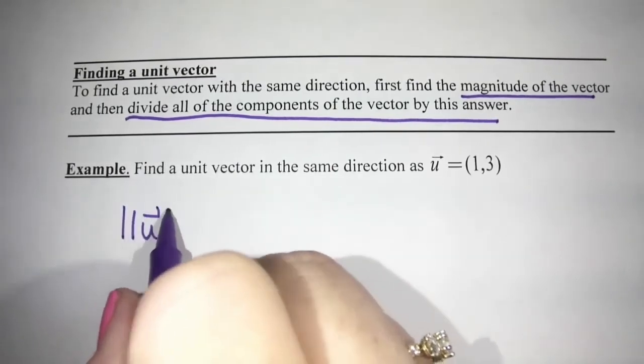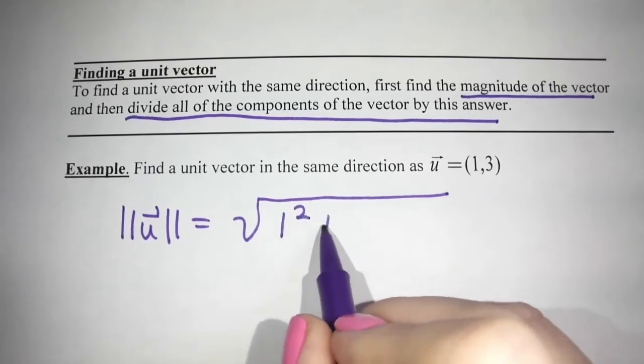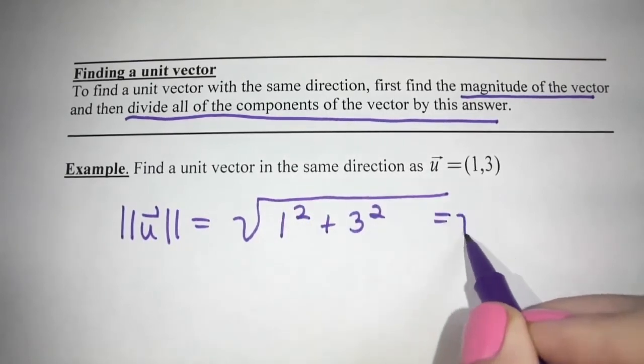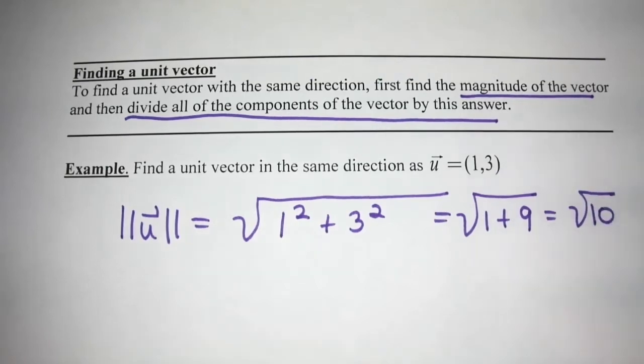So for example, find a unit vector in the same direction as U equals (1, 3). So first thing we do is the magnitude of U. So square root, one squared plus three squared. So that's one plus nine under a square root or root of 10.